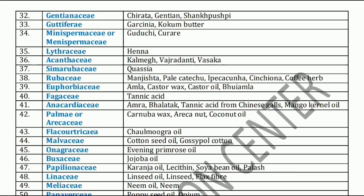Now, Anacardiaceae family. Anacardiaceae family has Amra, Bhallatak, Tannic acid, Chinese galls, Mango, and Cardanol oil. These are the Anacardiaceae family. Next family is Palmae or Arecaceae family. It includes Carnauba wax, Areca nut, and Coconut oil.